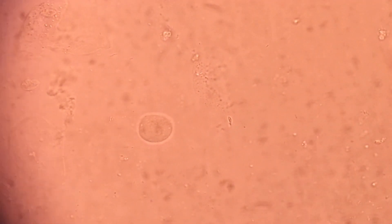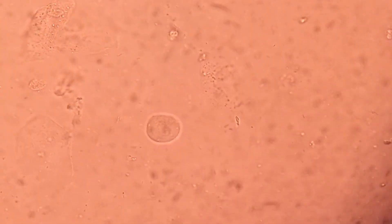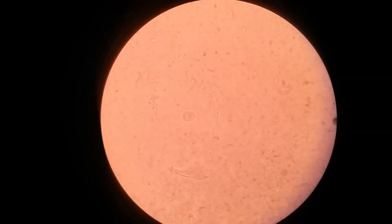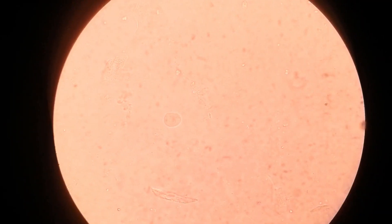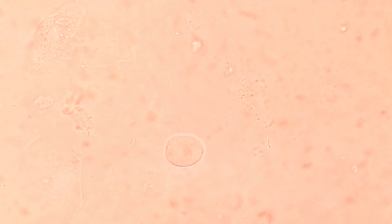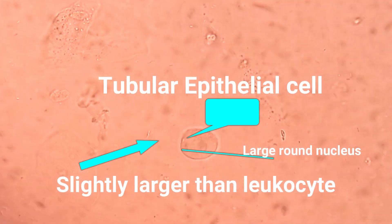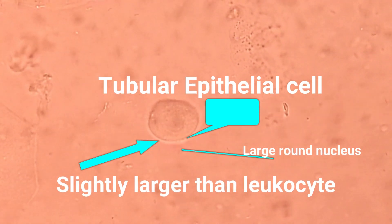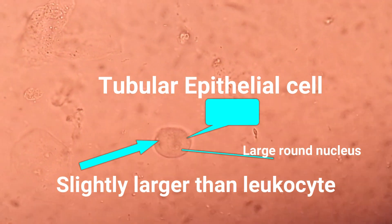Tubular epithelial cells are slightly larger than leukocytes and contain a large round nucleus. They may be cuboidal, flat, or columnar in shape.